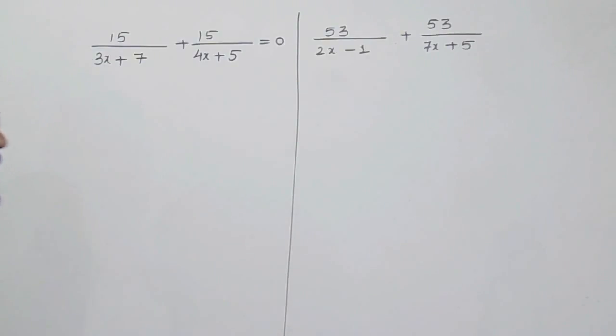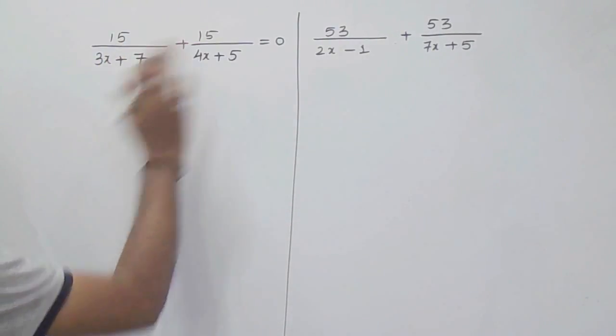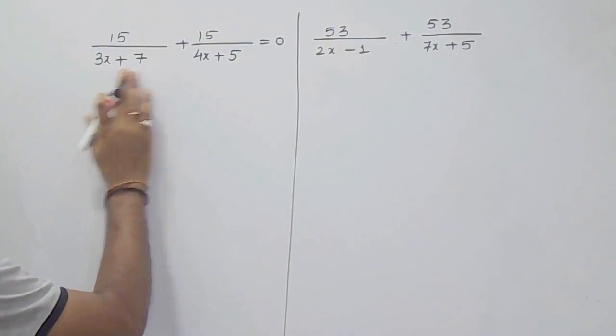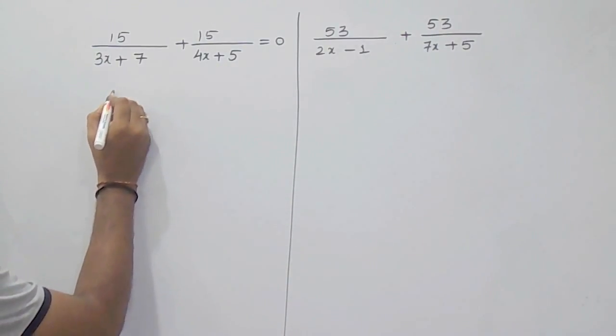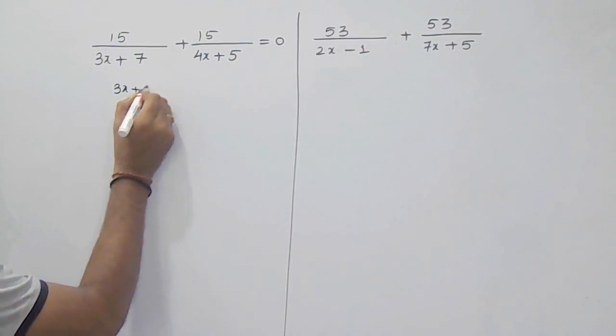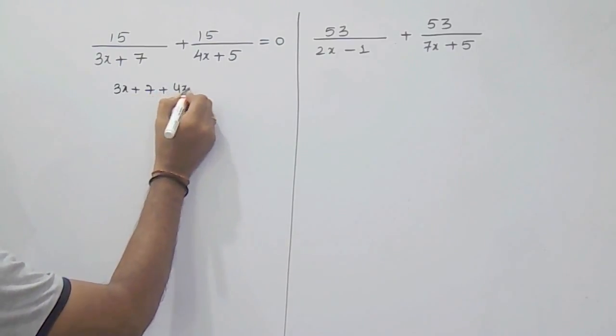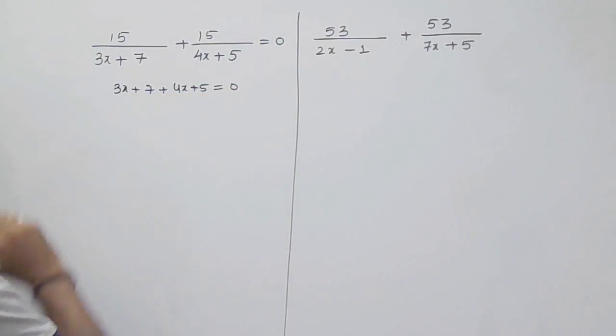So what you have to do? When the numerators are same, just add the denominator and equate with 0. So what you have to do here is 3x plus 7 plus 4x plus 5 equals 0.